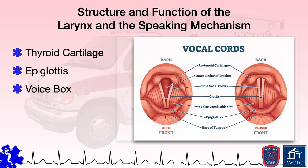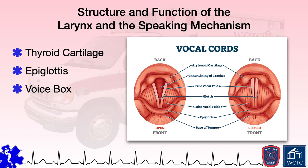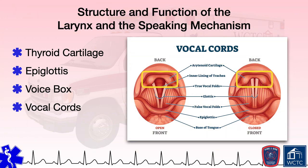Immediately inferior to the epiglottis in the larynx is the voice box, the area of the throat and larynx that consists of the vocal cords. The voice box and the structures within it are responsible for the third main function of the larynx: producing sounds and speech. Within the voice box is the arytenoid cartilage, which serves as a posterior attachment point for the vocal cords along with the vestibular folds, referred to as false vocal cords, and the vocal cords themselves. The opening between the vocal cords is called the glottis or glottic opening. If irritated, such as by the aspiration of a foreign body into the larynx, the vocal cords will spasm—known as laryngeal spasm—and close to protect the airway.